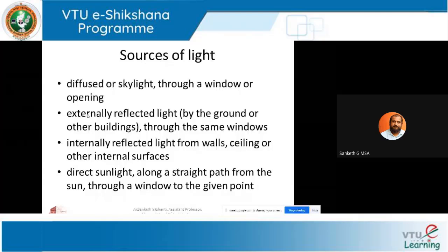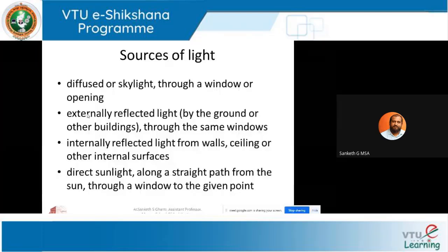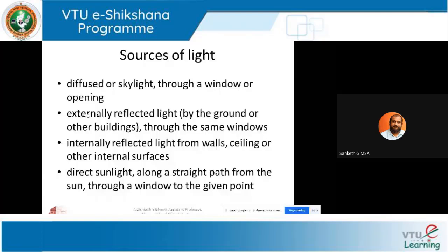Water bodies like lakes, ponds, or rivers can also reflect a lot of light. In coastal areas, there is significant light reflected by the sea — apartments located right next to the coast experience this. Even in Kerala, buildings near inland water bodies and backwaters face the issue of light getting reflected from the water body. So externally reflected light is the second source, after skylight diffused light.